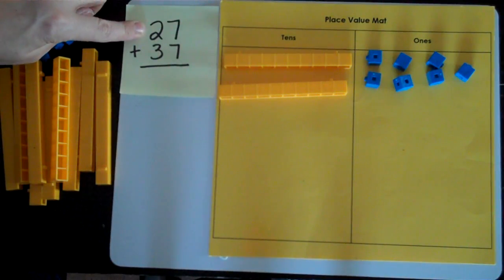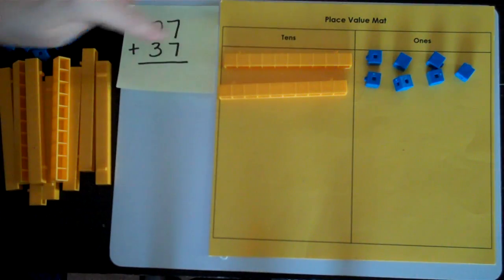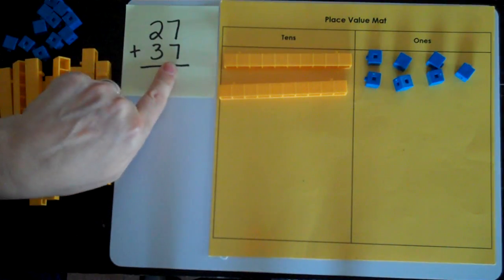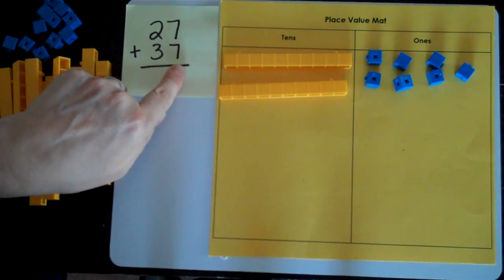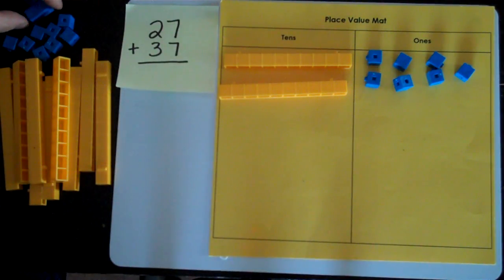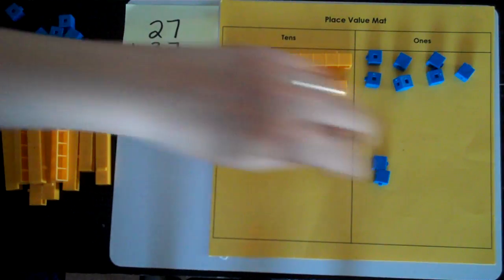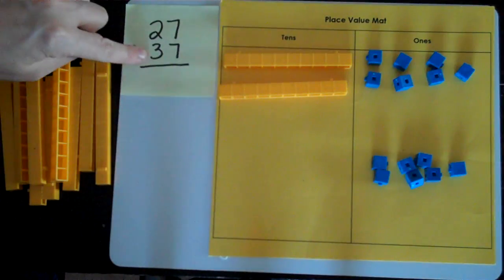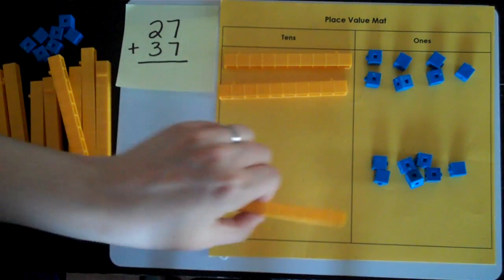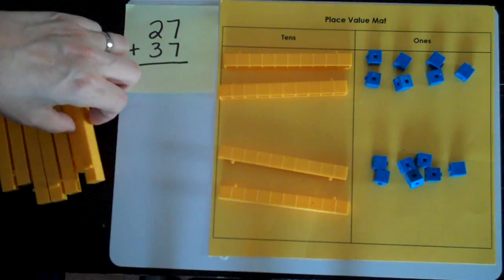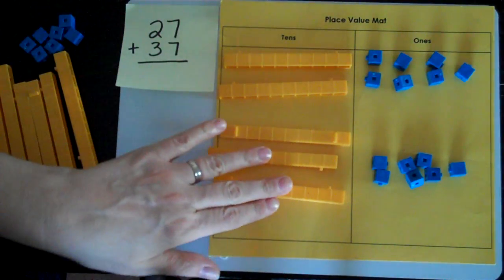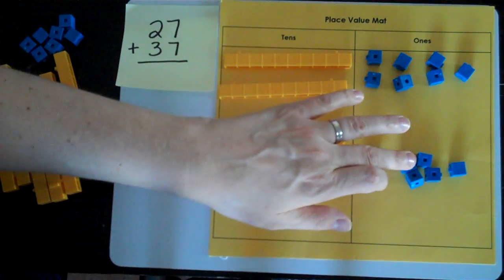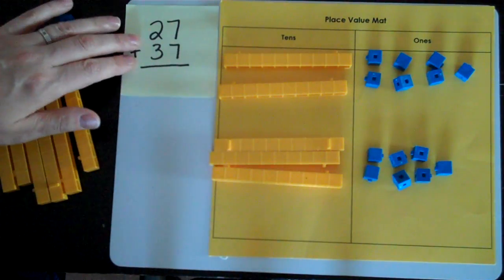Just like I can see in the algorithm 27 clearly and 37 clearly, I need to do the same thing on my place value mat. So I'm going to make 37 starting in the ones place. Seven ones. Two, four, six, seven, three tens. One, two, three. I'm going to double check that I did that correctly. 10, 20, 30, 31, 32, 33, 34, 35, 36, 37. Good.